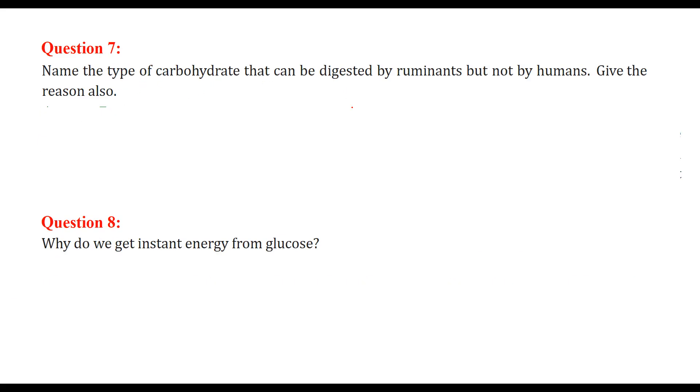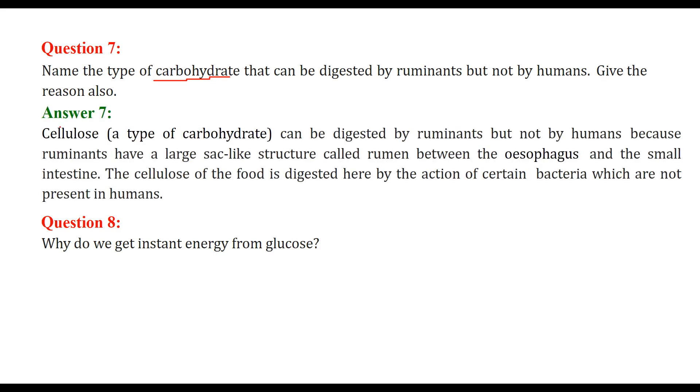Name the type of carbohydrate that can be digested by ruminants but not by humans. Give the reason also. This carbohydrate is cellulose. The cellulose, which is a type of carbohydrate, can be digested by ruminants but not by us humans because the ruminants have a large sac-like structure we call it as rumen, and this is between esophagus and the small intestine. The cellulose of the food is digested here by the action of certain bacteria which are not present in humans.